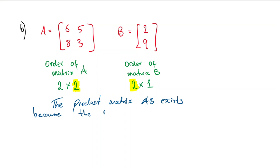The product matrix AB exists because the number of columns in A is the same as the number of rows in B.